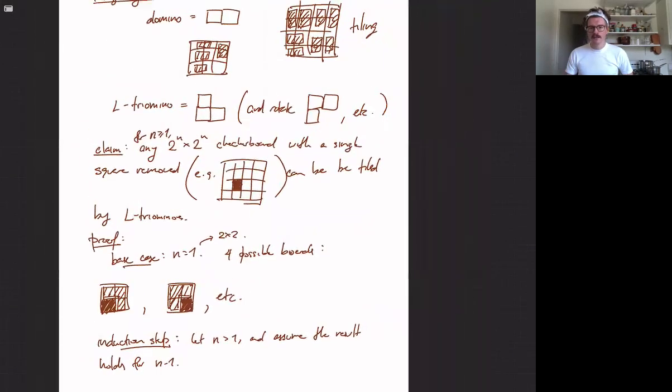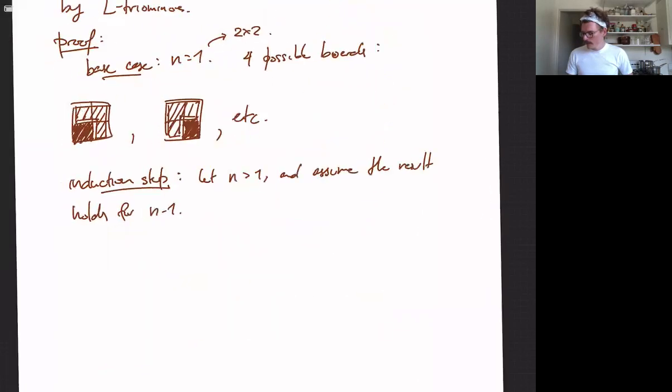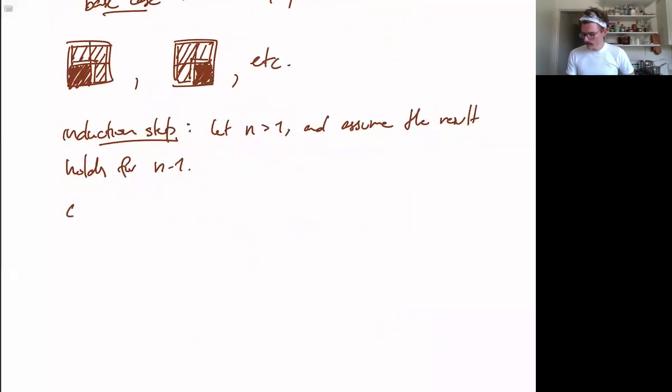So we will see, we know what the induction hypothesis is. It's that a 2 to the n minus 1 by 2 to the n minus 1 checkerboard can always, with a single square removed, can be tiled. And so let's consider a 2 to the n by 2 to the n checkerboard with one square removed.